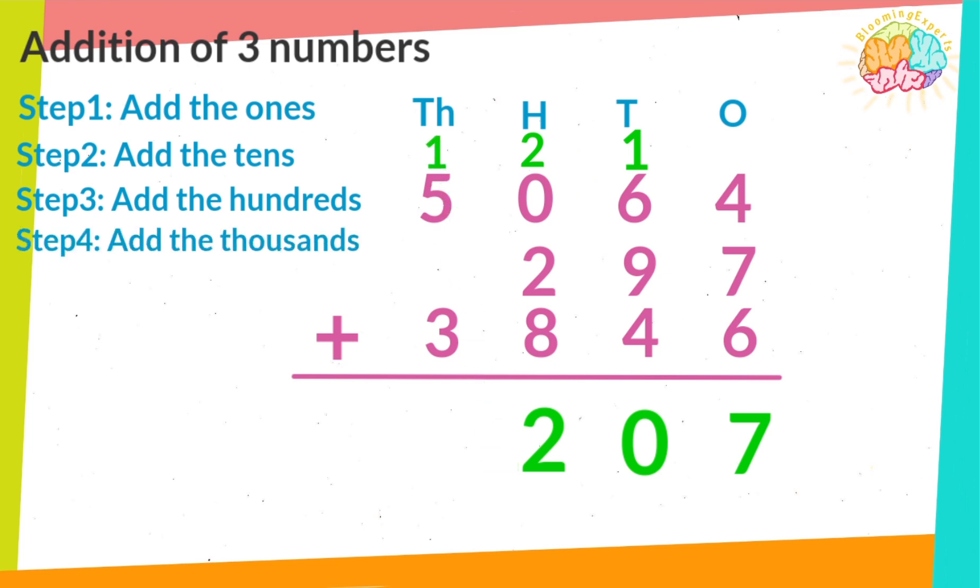Step 4. Add the thousands. 1 plus 5. Starting from 1. 2, 3, 4, 5, 6. Plus 3, 7, 8, 9. Write the answer below.